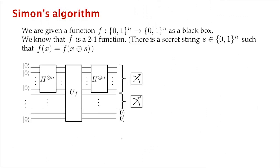Putting it all together, this is what Simon's algorithm looks like. You start with your input qubits in the state zero, do a Hadamard transform, compute f, do another Hadamard transform, and measure. This measurement gives you a linear equation that s must satisfy. Repeat this process n minus 1 times, collect n minus 1 linear equations, solve them, and you find your secret string s.